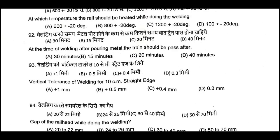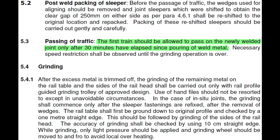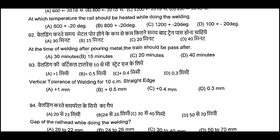Question Number 92: At the time of welding, after pouring of metal, when should the train be allowed to pass? The first train should be allowed to pass on the newly welded joint after 30 minutes after the pouring of metal. If necessary, a suitable speed restriction should be imposed until grinding is completed. Question Number 92, A is the correct answer: 30 minutes.